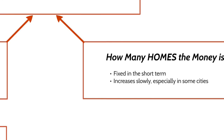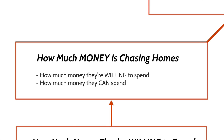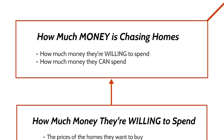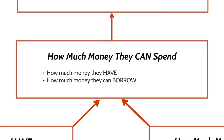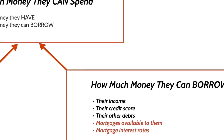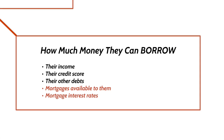Now let's look at the first part of that equation: how much money. Two factors determine how much money is chasing homes — how much money people have and how much money people can borrow. And two huge factors that determine how much people can borrow are interest rates and how loose mortgage companies are with their money.